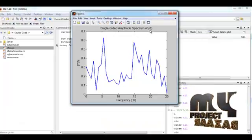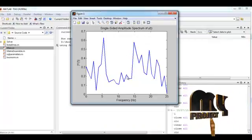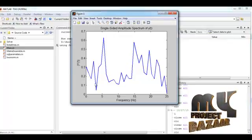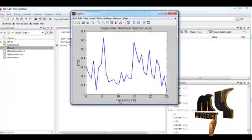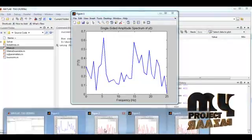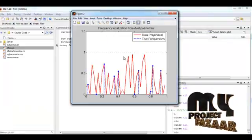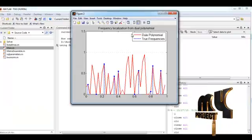This is the single sided amplitude spectrum of Y of T. We find the spectrum graph for our input signal. The Y axis represents the amplitude of the signal and X axis represents the frequency of our input signal.